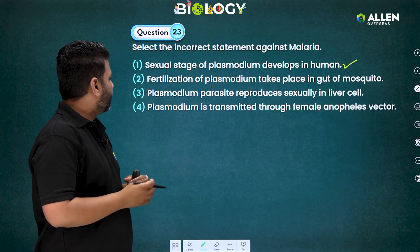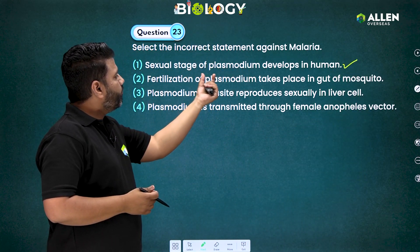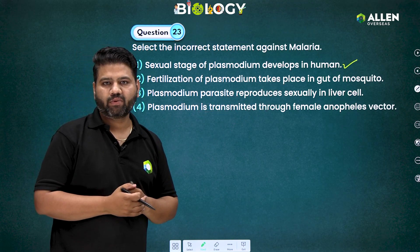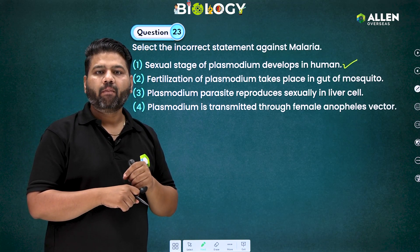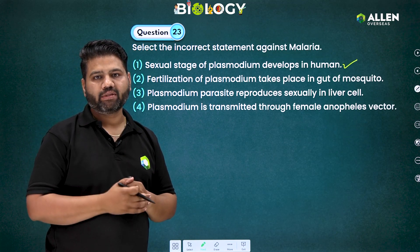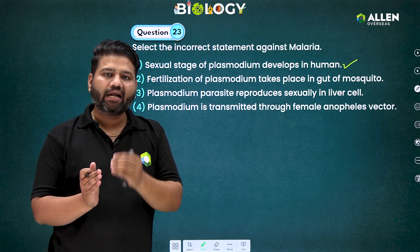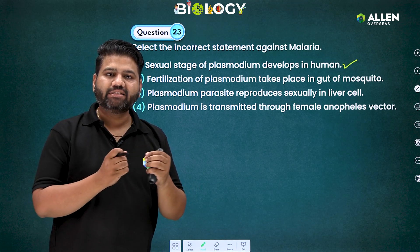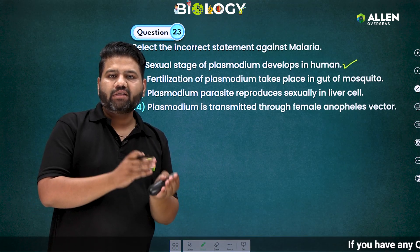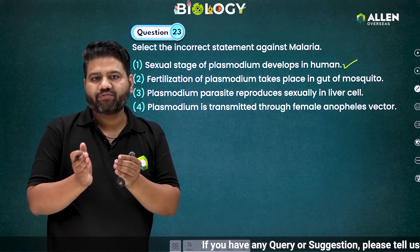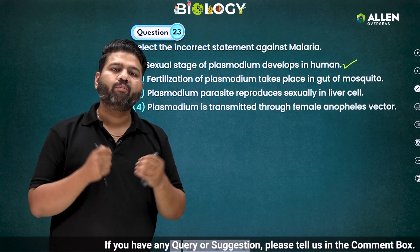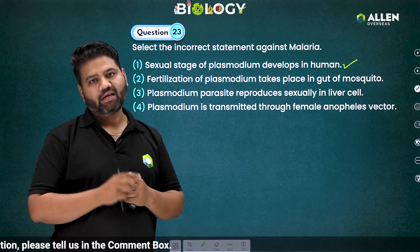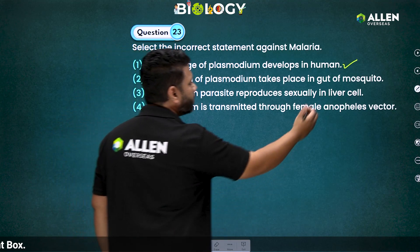The second statement says fertilization of Plasmodium takes place in the gut of the mosquito. When a female Anopheles bites a human, the gametocytes enter the mosquito and reach the gut, where they convert into gametes — male and female. Fusion of the male and female gametes, meaning fertilization, then takes place. That's why the second statement is also correct.